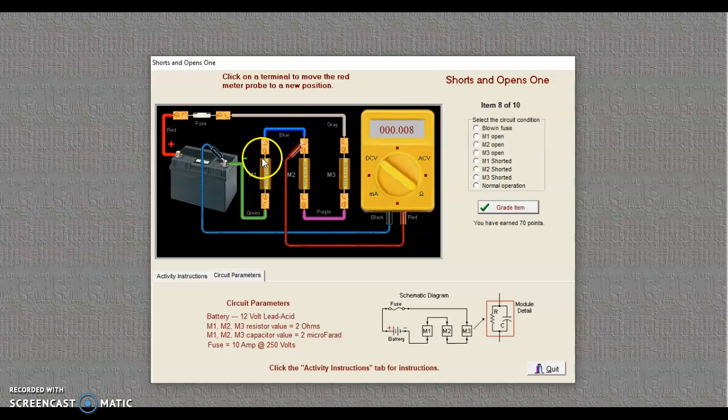All right. And I see M1 is between my probes. So M1 is my shorted component. Say it's shorted. Grade that item. We're good. We can continue on. So before I hit continue, reset my probes.